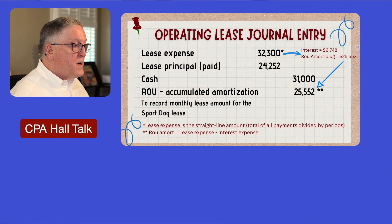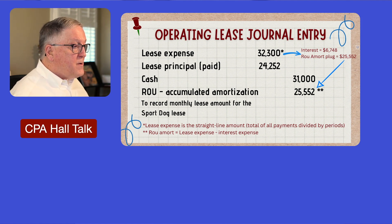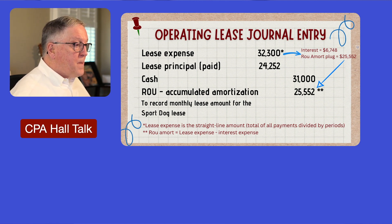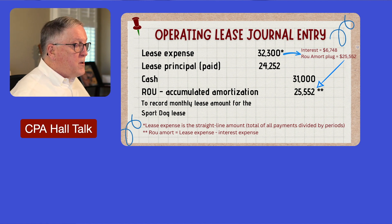With the straight-line lease amount determined, you take the straight-line lease expense and subtract the interest expense to back into the right-of-use asset amortization — it's a plug. That amortization amount becomes a credit to accumulated amortization for the right-of-use asset. So the operating lease journal entry is: a debit to lease expense on a straight-line basis, a debit to lease principal paid, a credit to cash paid, and a credit to ROU accumulated amortization. Straight-line lease amount minus interest expense gives you that ROU amortization credit.